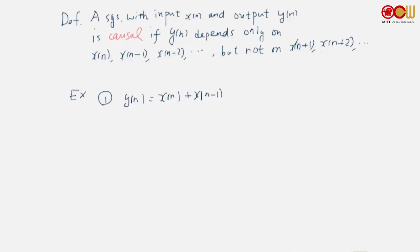For example, would this be a causal system: y(n) = x(n) + x(n-1)? Yes, because it only depends on the past sample and also x(n), so this is indeed causal.